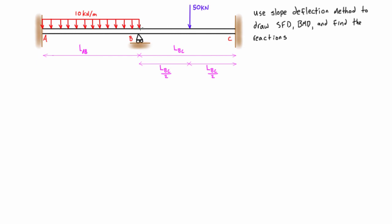This beam is only one degree kinematically indeterminate, meaning there's just one unknown slope or displacement. At point A, the slope and displacement are zero; at C, the slope and displacement are both zero; the displacement at B is zero — we just don't know the slope at B. So it's only one degree kinematically indeterminate, making it a great candidate for the slope deflection method.